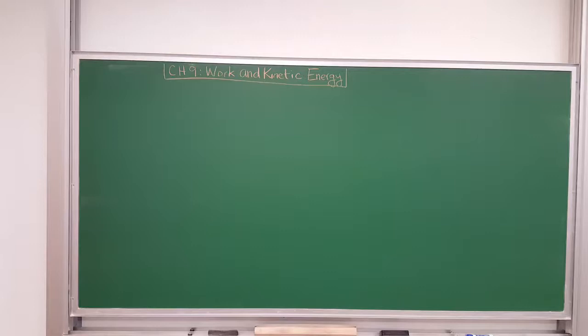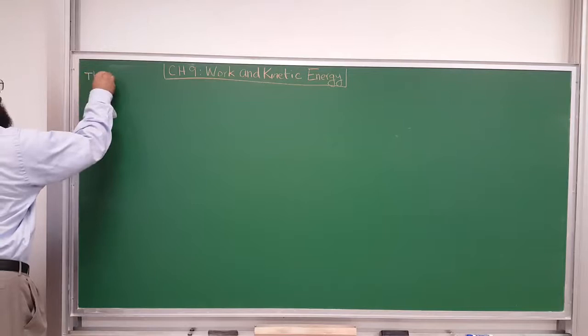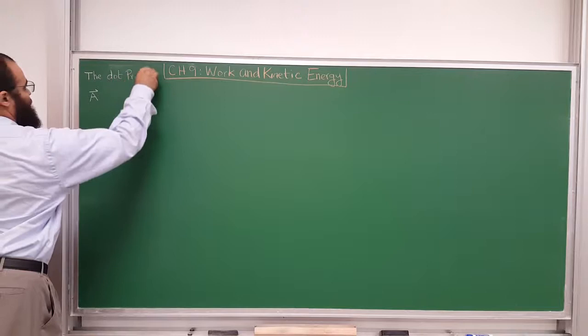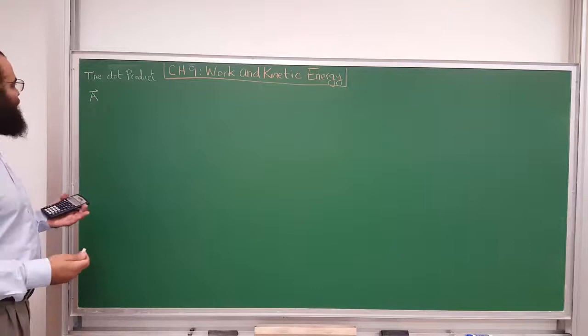In order to do that, the very first thing I'm going to start with is talk about vectors again, and in particular, a particular product of vectors called the dot product of two vectors, because the definition of work will involve the dot product. This lecture will be a little bit more math than usual; however, once we get down the concept, we don't have to refer to that math over and over.